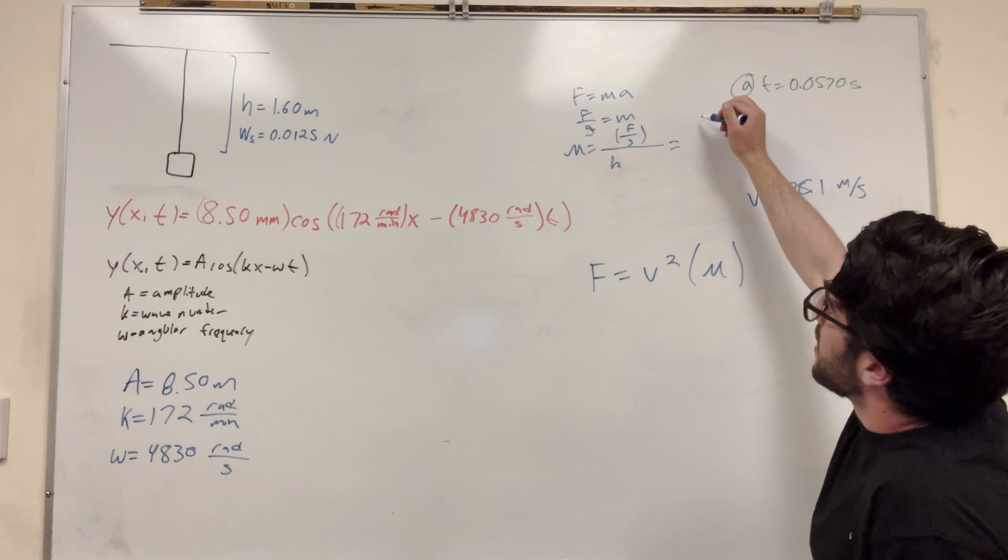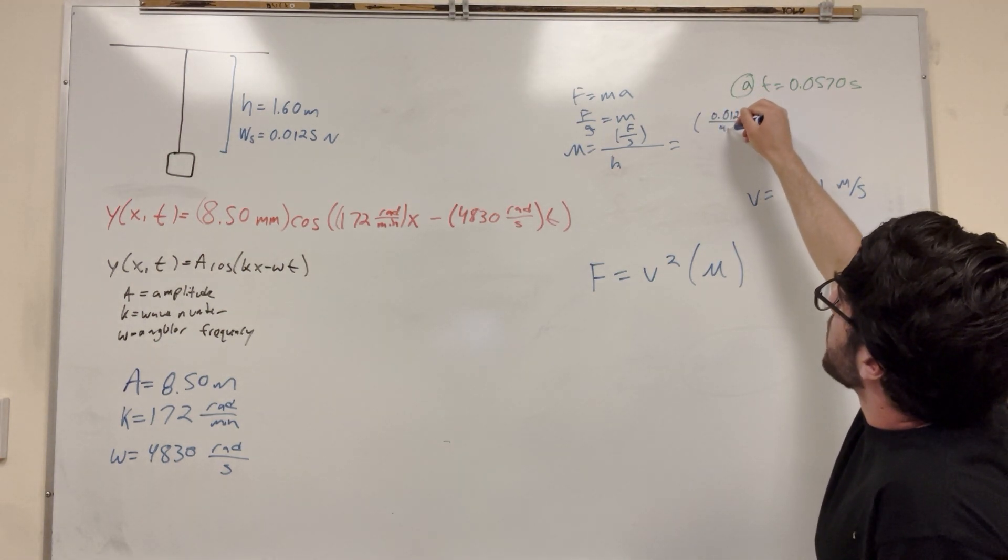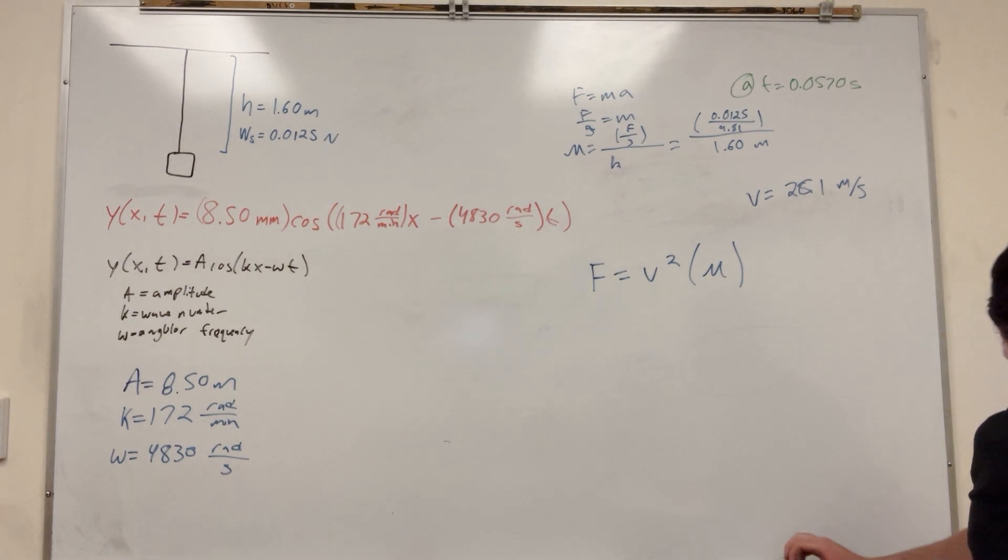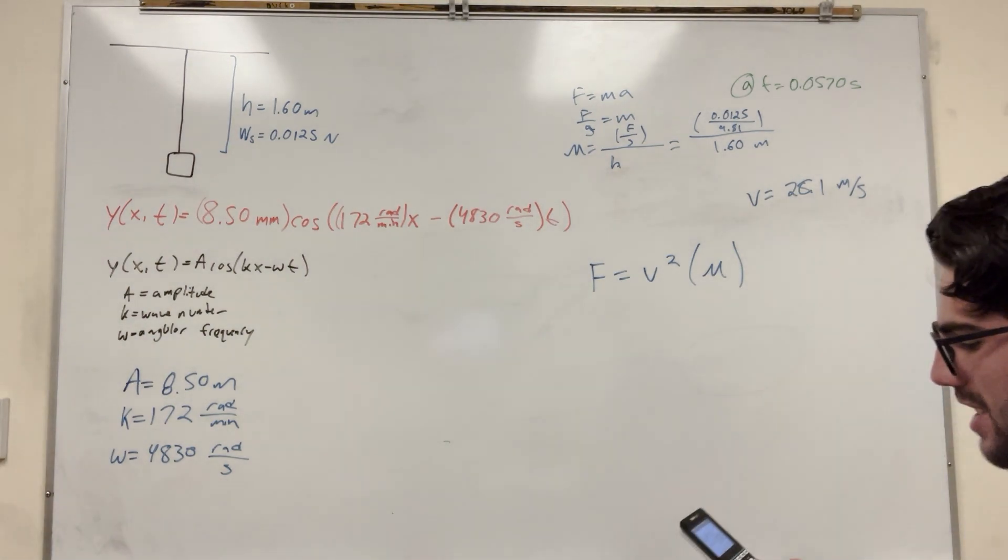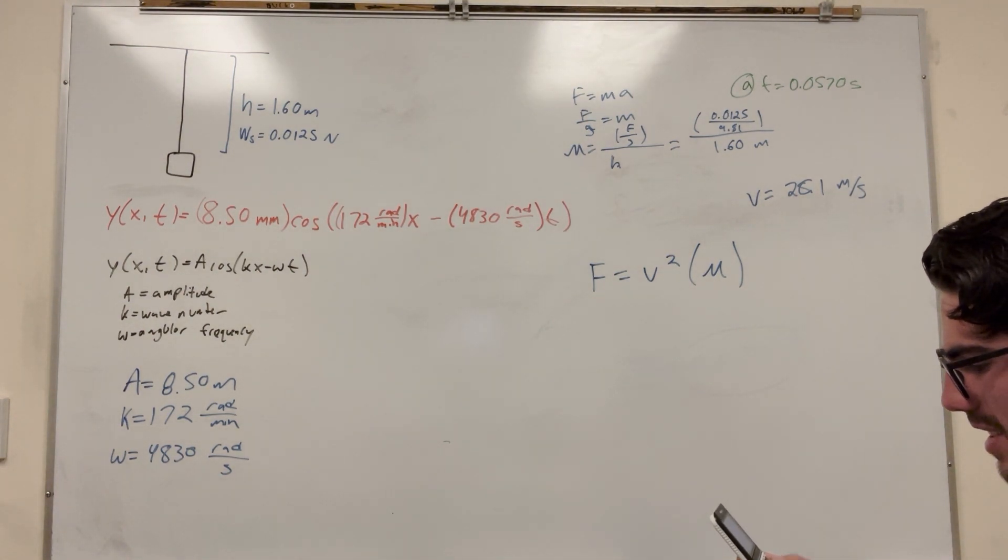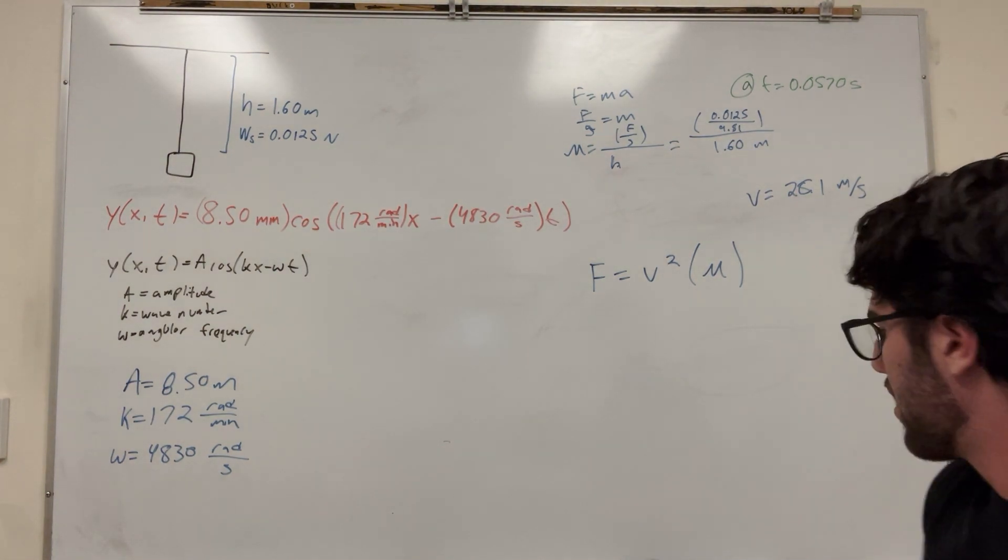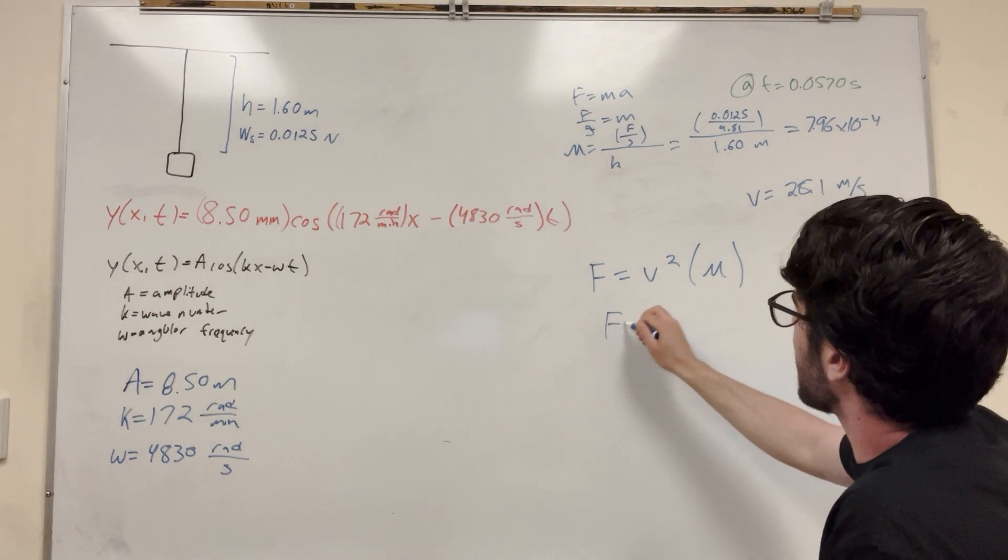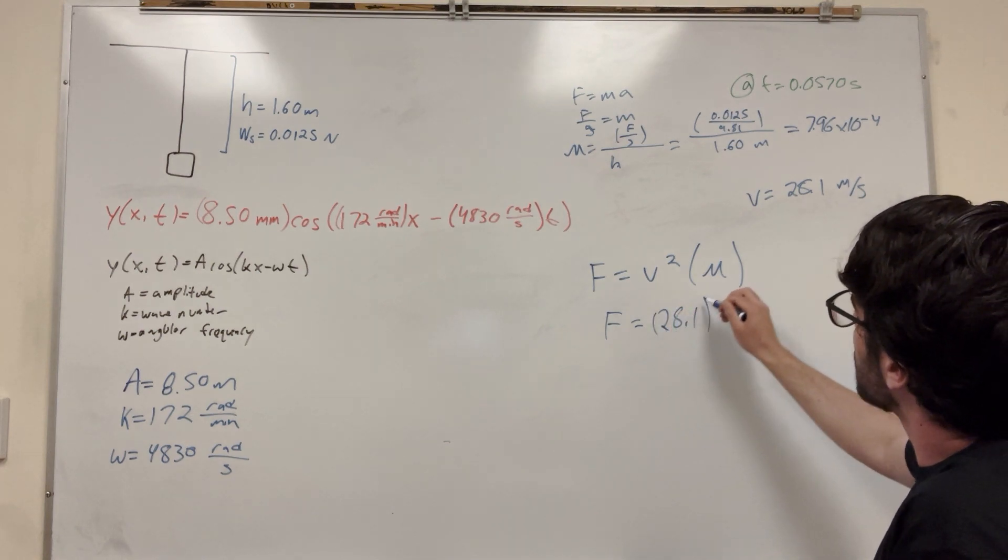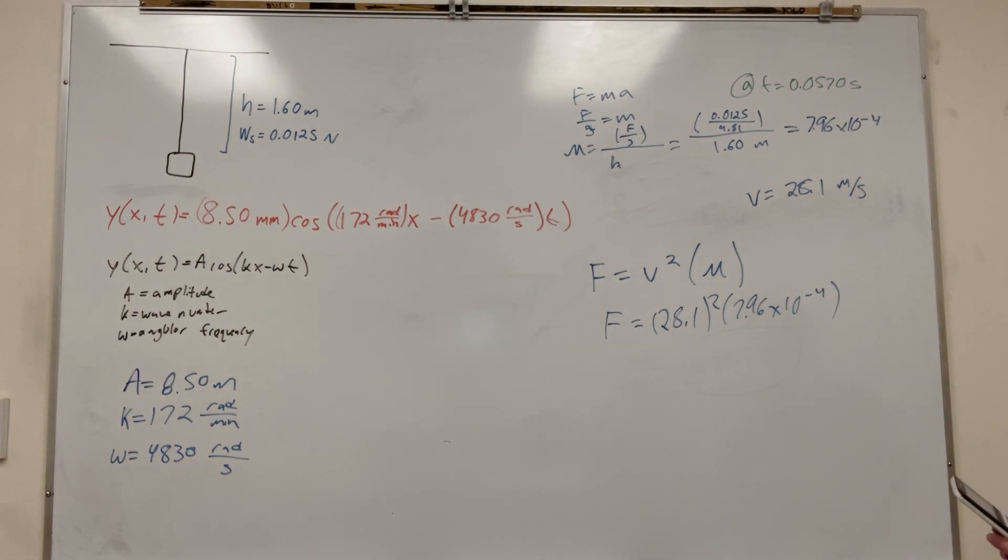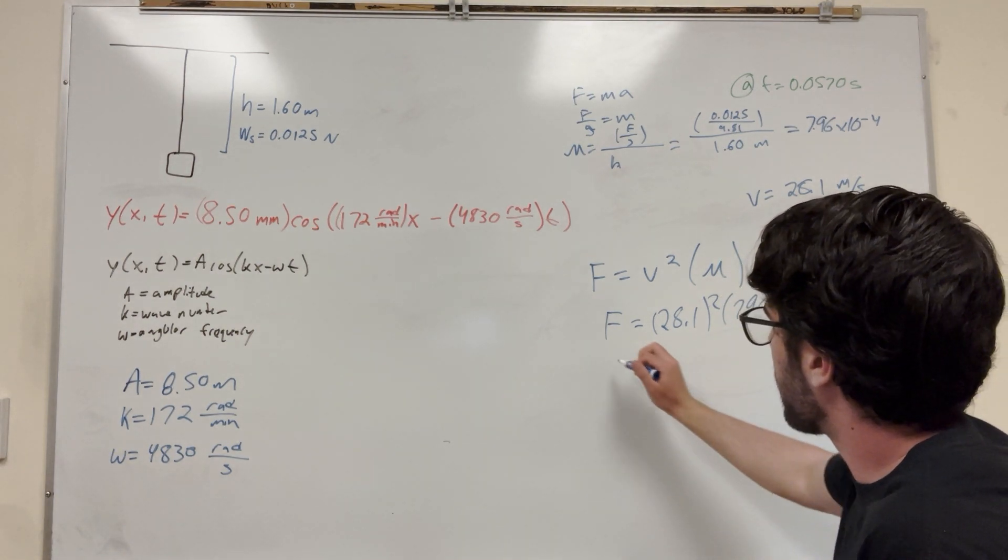So if you plug in your numbers for this, you're going to get 0.0125 divided by 9.81, and all of that divided by 1.6 meters. And what that number is going to be, let me plug that in because I'm not sure. I didn't solve this stuff because I was kind of goofy. 0.0125 divided by 9.81 divided by 1.6. I did not type that in correctly. It's a small number, it's like 7.96 times 10 to the negative 4. So basically we have a velocity here. So if you plug in this 28.1 squared times this number, 7.96 times 10 to the negative 4, you get the right number.